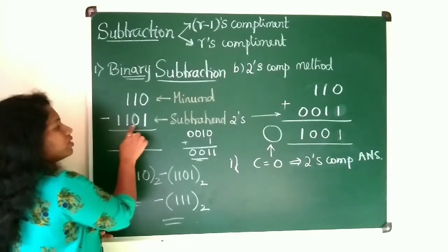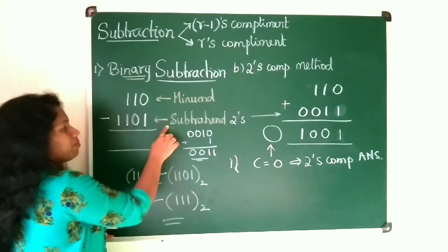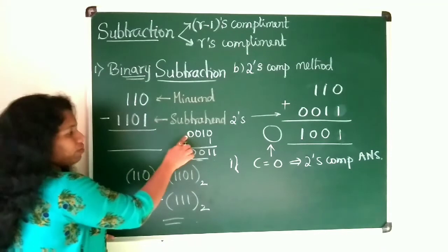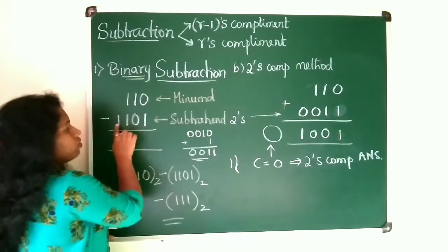1, 1, 0 minus 1, 1, 0, 1. So take 2's complement for this subtrahend. How to take 2's complement? First take 1's complement then add 1 to it. 1, 1, 0, 1.